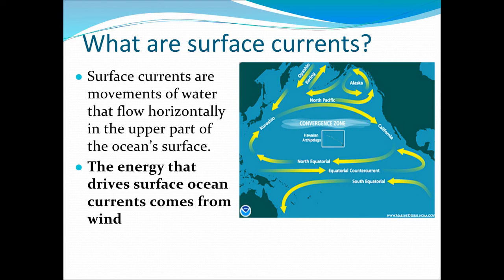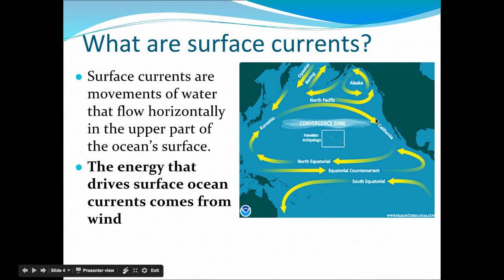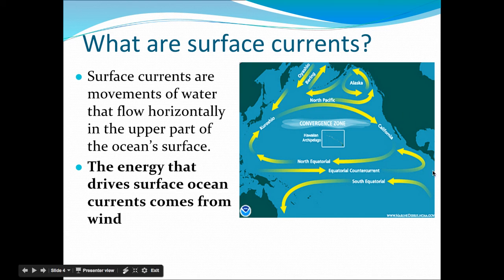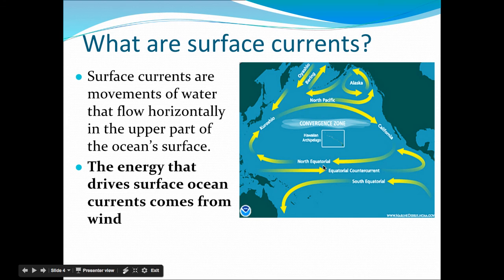Let's talk about our first major type of current: the surface current. This is probably what you think of when you think of an ocean current. This is water that moves horizontally, from point A to point B on a map, in the upper part of the ocean surface. The energy that drives this comes from wind patterns across the world — depending on where you are, some winds are deflected towards the west, some towards the east. Wind patterns control that.